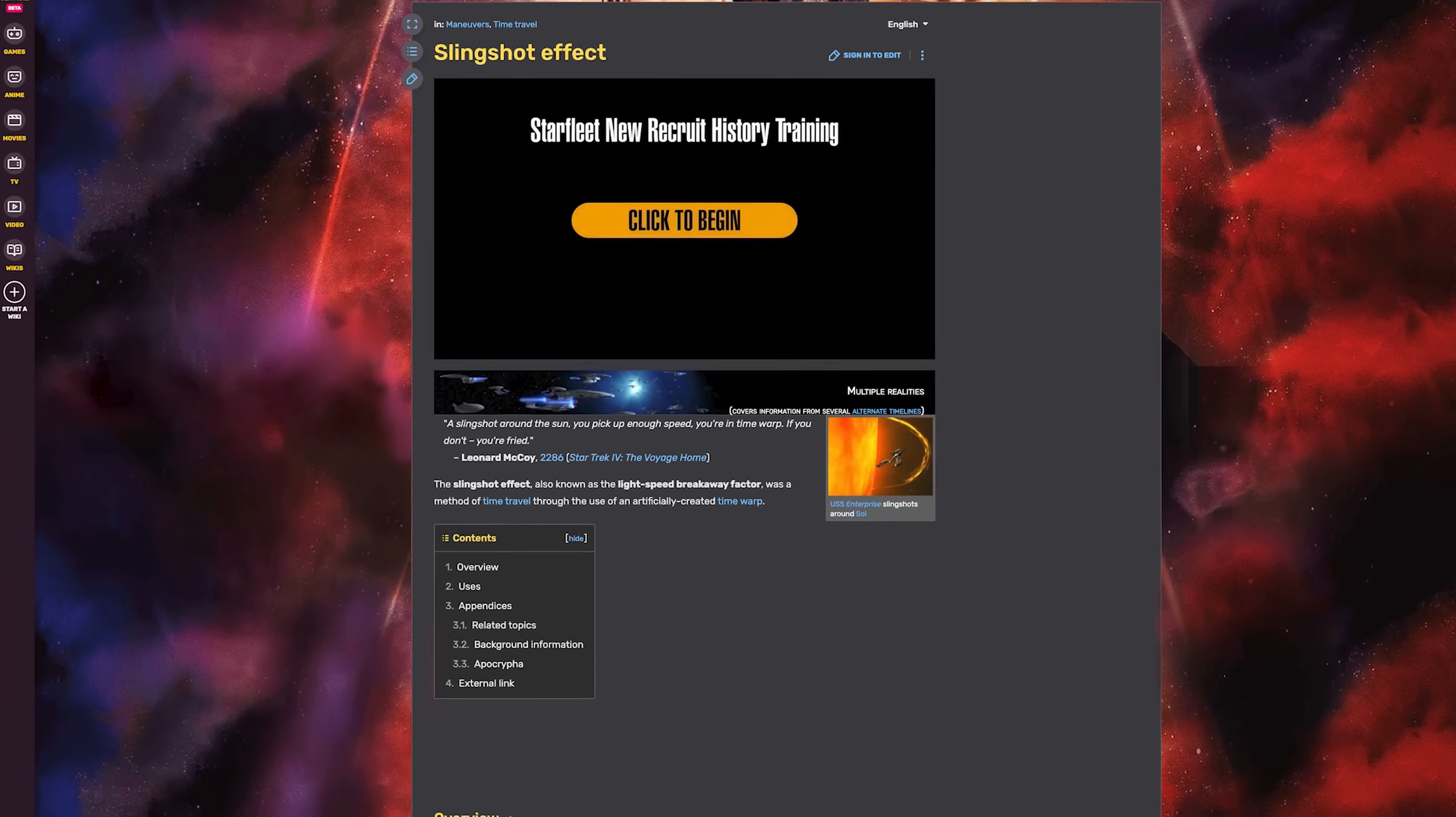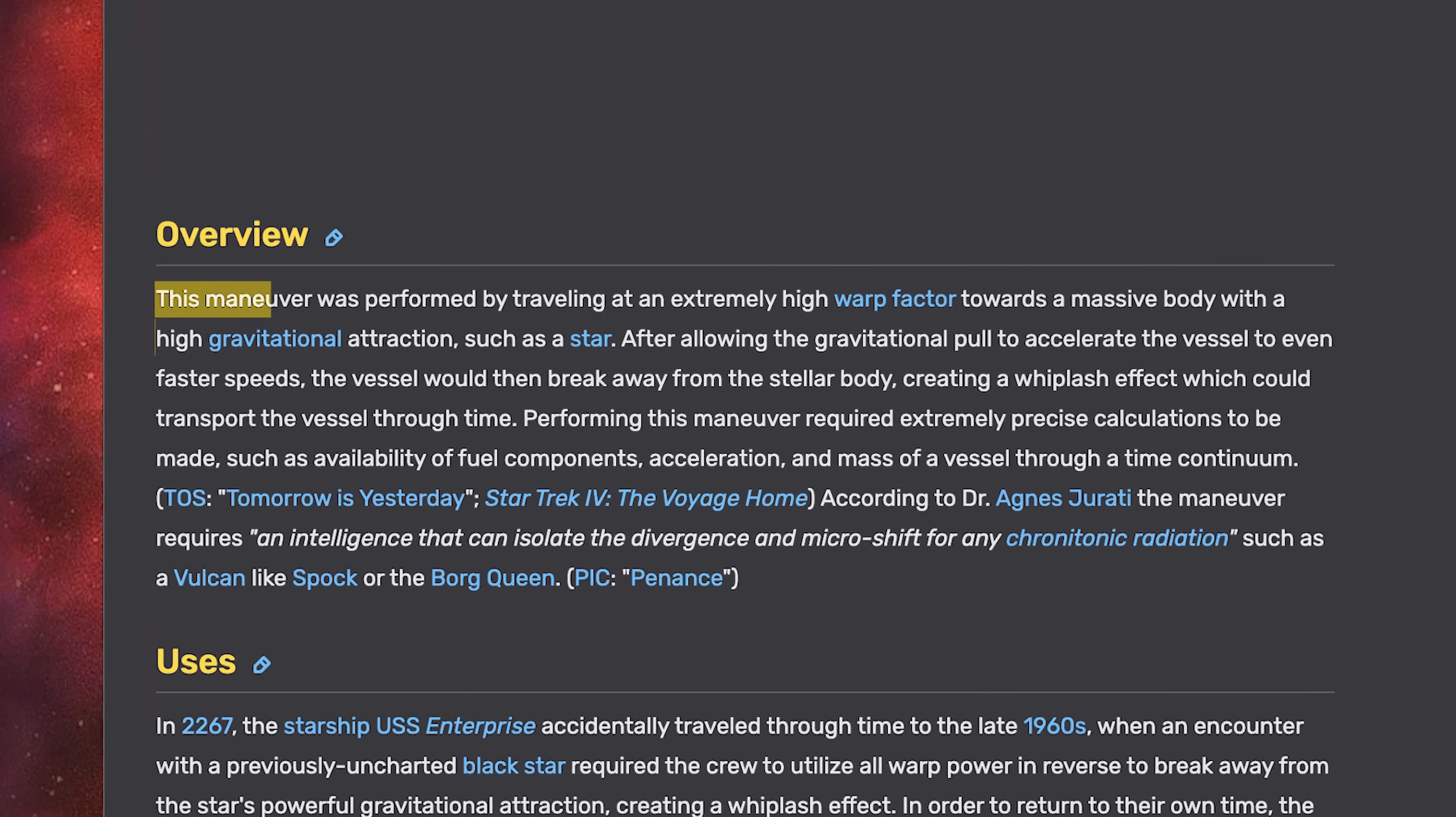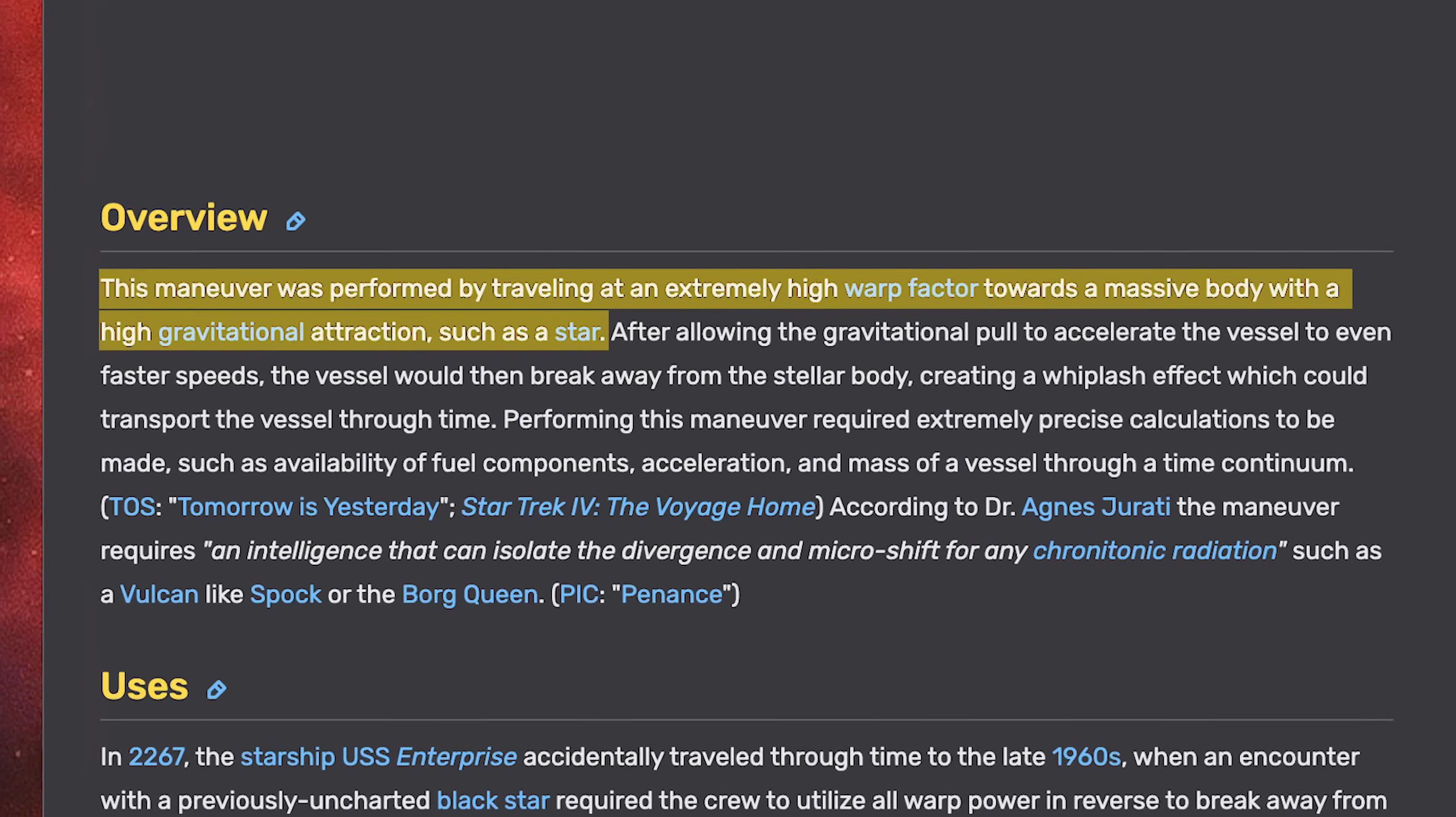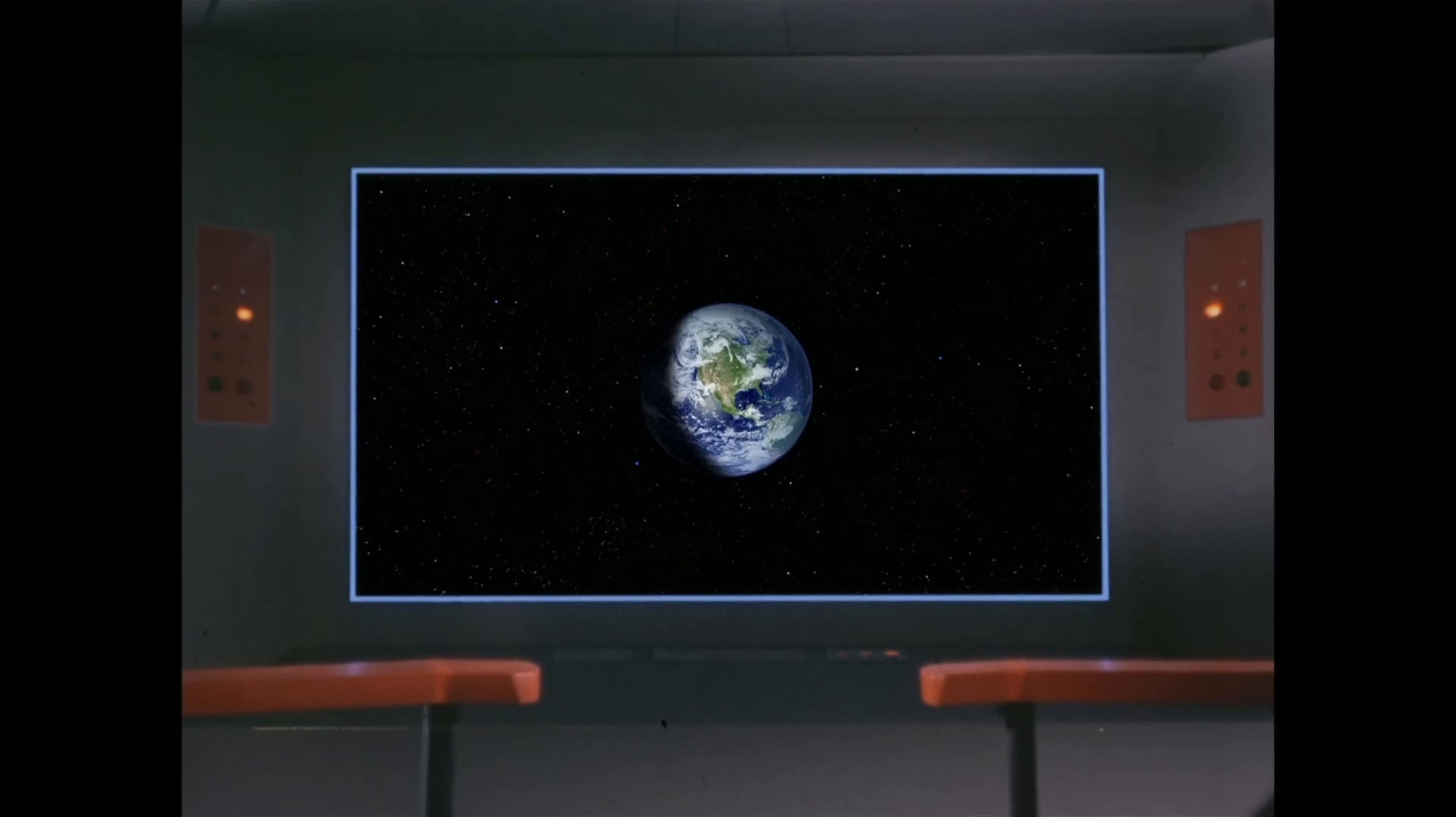First off, here's a little bit of what Memory Alpha, the wiki for canon Star Trek information, has to say about the Slingshot Effect. The maneuver is performed by traveling at an extremely high warp factor towards a massive body with high gravitational attraction, such as a star. After allowing the gravitational pull to accelerate the vessel to even faster speeds, the vessel can then break away from the stellar body, creating a whiplash effect that can transport the vessel through time.